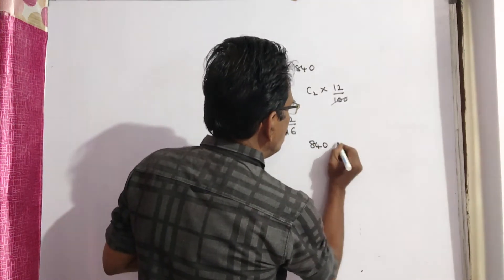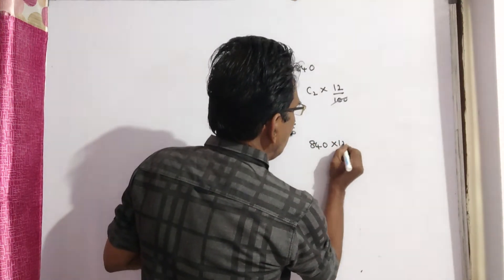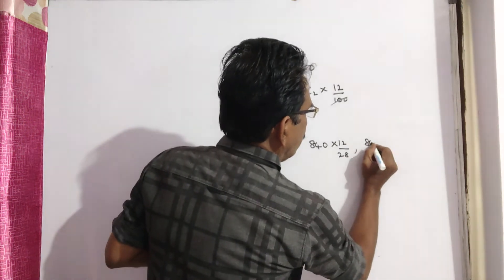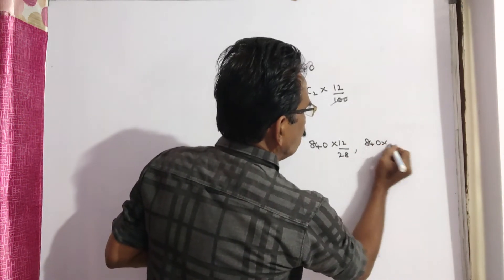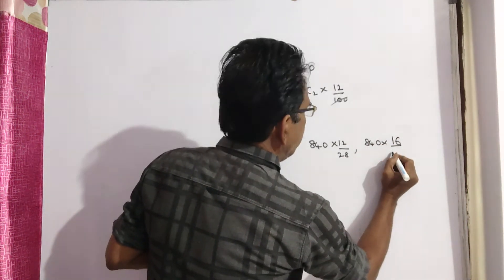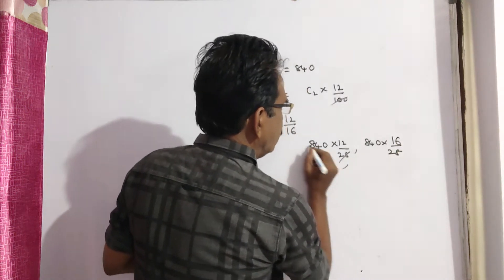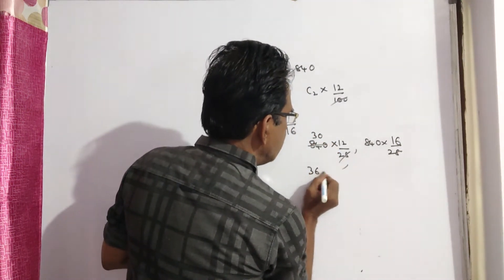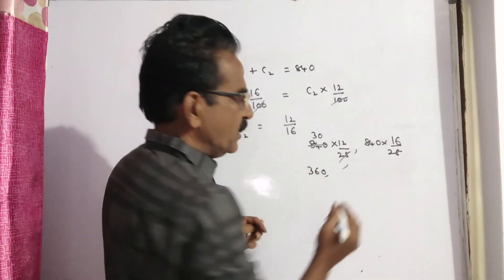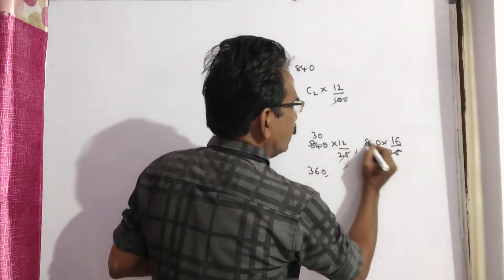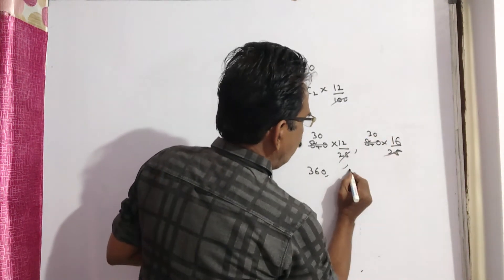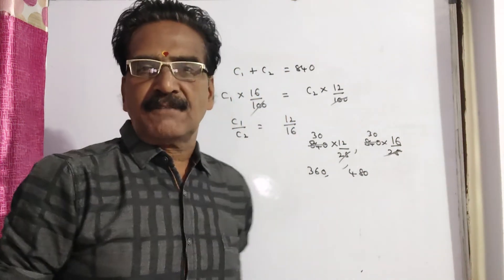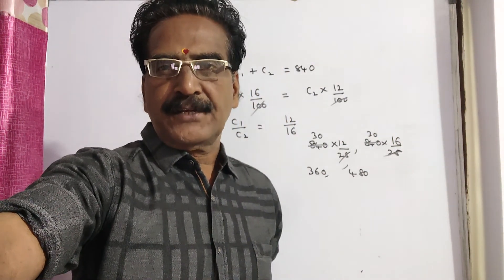840 into 12 by 28 gives Rs. 360, the cost price of the first watch. And 840 into 16 by 28 gives Rs. 480, the cost price of the second watch. Okay, thank you.